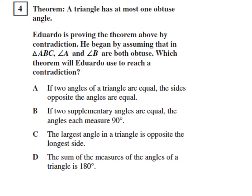Problem 4 of the CST Release Test questions for Geometry. Theorem: A triangle has at most one obtuse angle. Eduardo is proving the theorem above by contradiction.